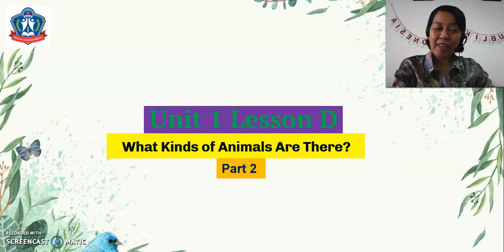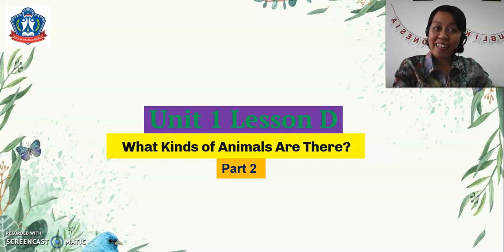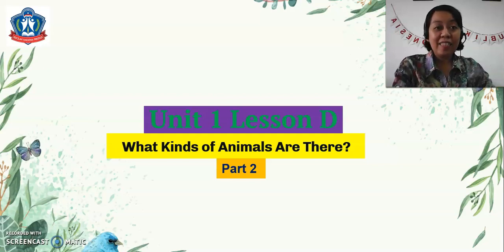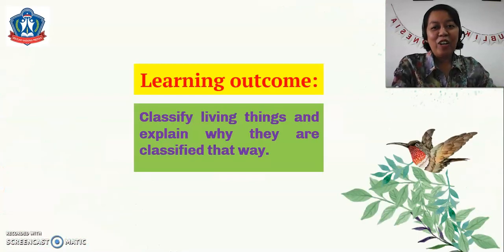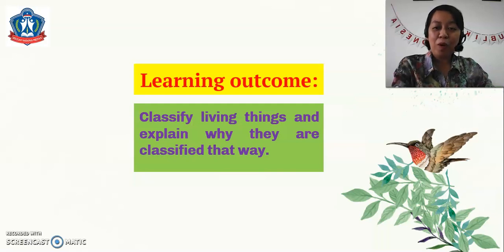Hello, P3 students! Welcome to our science class again. We are now on Unit 1, Lesson D — the second part of What Kinds of Animals Are There. So, are you ready? Let's get started! Our learning outcome is to classify living things and explain why they are classified that way.